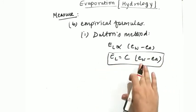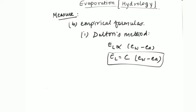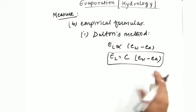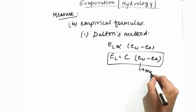Now this Ew and Ea I have already mentioned. What is Ew? Ew is the saturation vapor pressure of air and Ea is the actual vapor pressure of air. Now this Ew and Ea will be in millimeter of Hg.